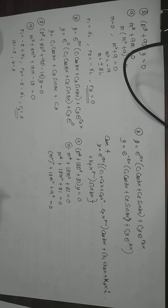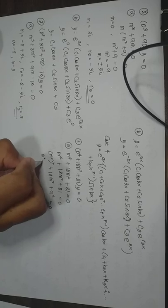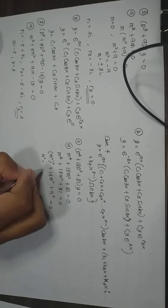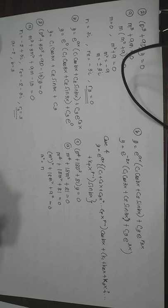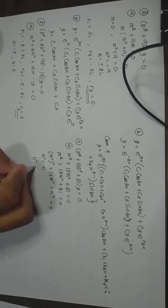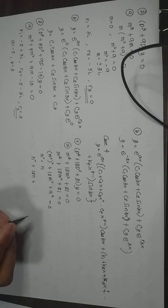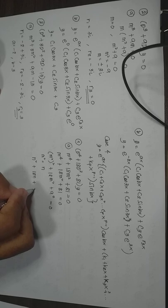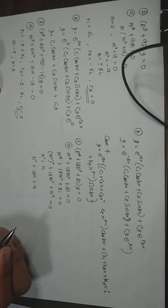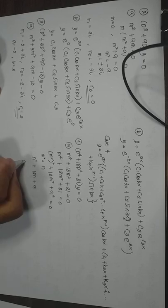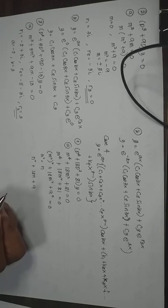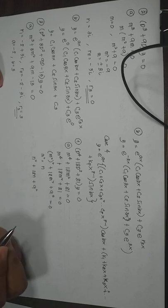We could also factor this directly. Using the quadratic formula with A equal to 1, B equal to 18, C equal to 81, we get N equal to negative 18 plus and minus the square root of 18 squared minus 4 times 1 times 81, all divided by 2 times 1.